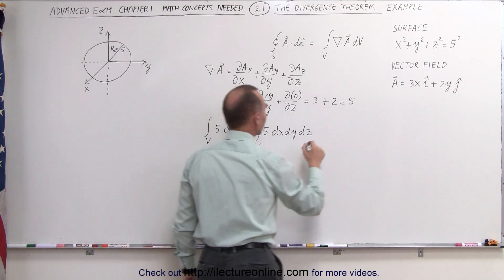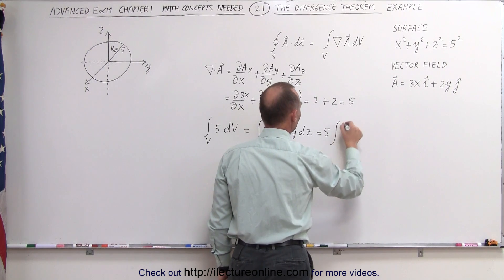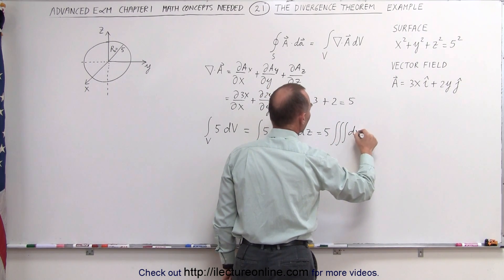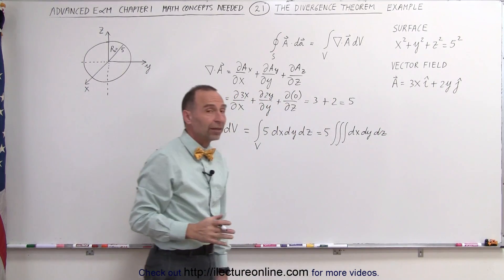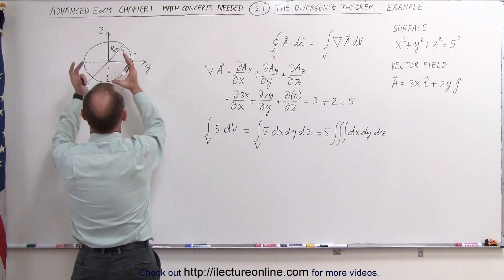Taking this outside the integral sign, this is equal to 5 times the triple integral over dx, dy, and dz. But then we realize that this is simply the volume of the sphere.